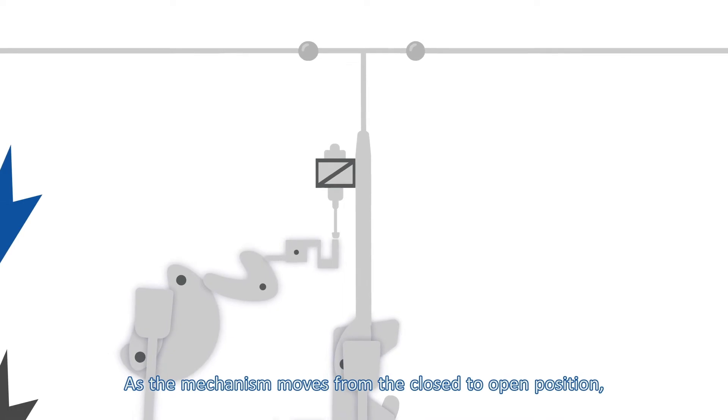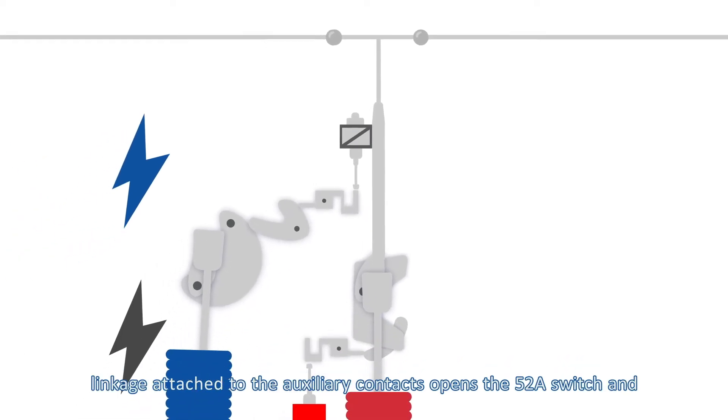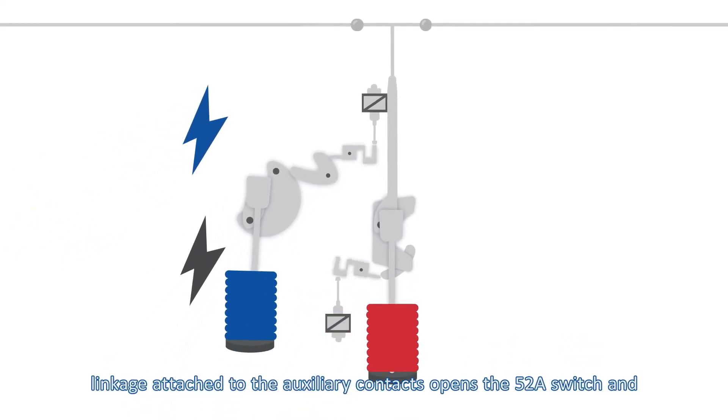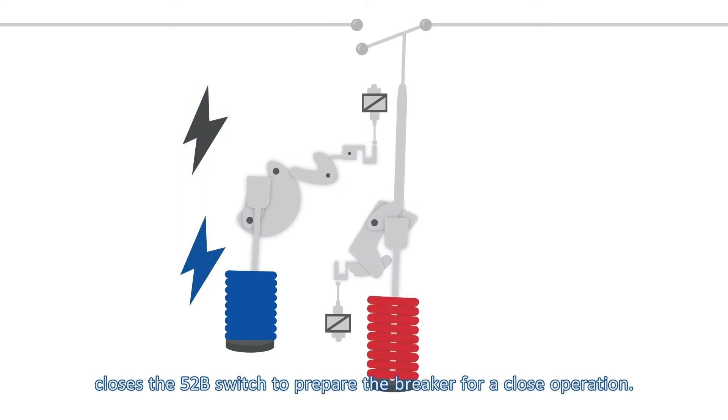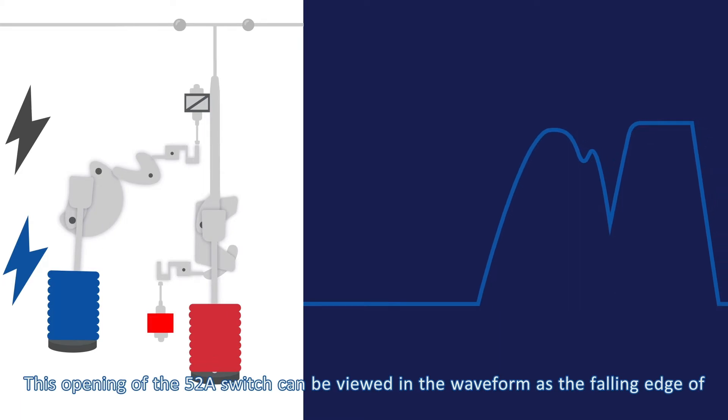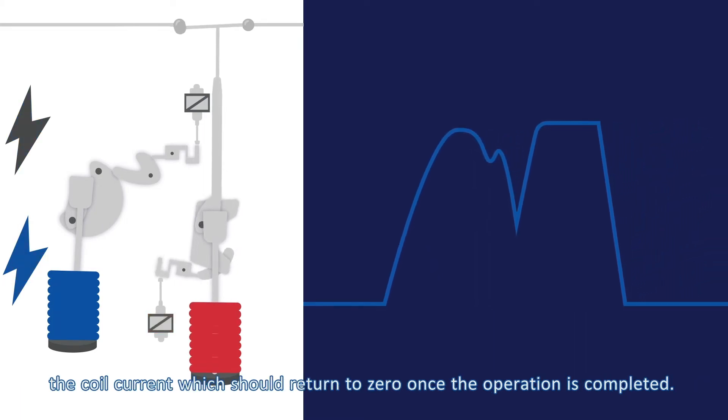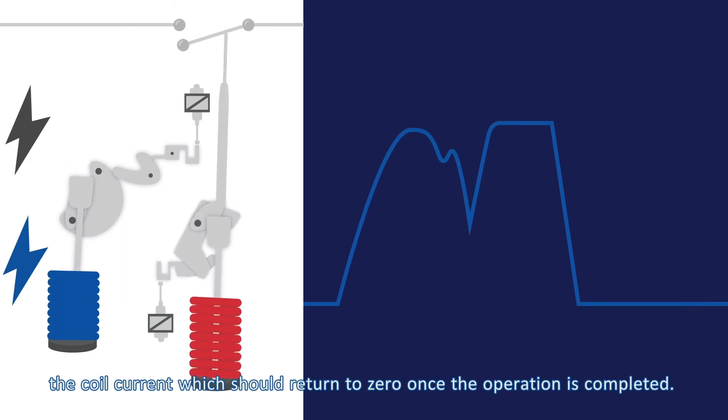As the mechanism moves from the closed to open position, linkage attached to the auxiliary contacts opens the 52A switch and closes the 52B switch to prepare the breaker for a closed operation. This opening of the 52A switch can be viewed in the waveform as the falling edge of the coil current, which should return to zero once the operation is completed.